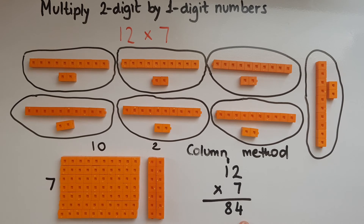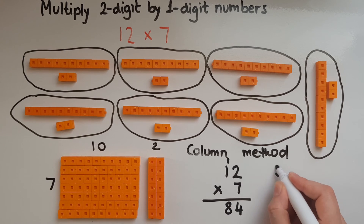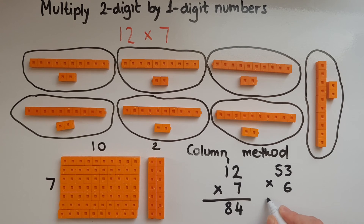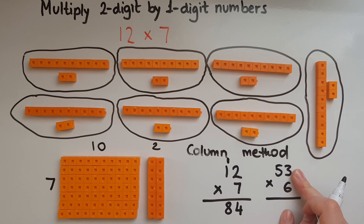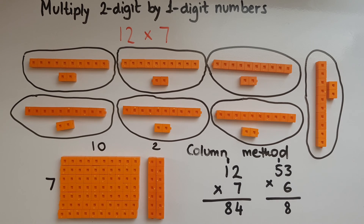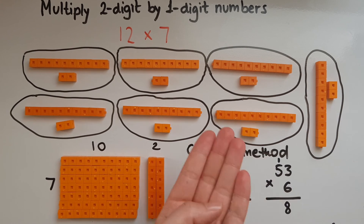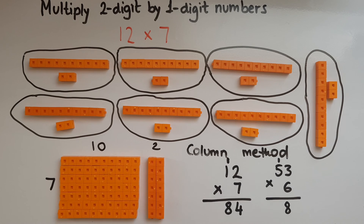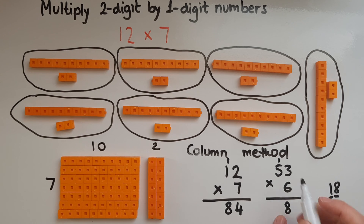Now let's do the other example: 53 times 6. We start with the units — 6 times 3 gives 18, so we put the 8 down and carry over the 1, which represents the tens. Because in 18, 8 is the unit and 1 represents the tens, so we move it to the tens column. Then 6 times 5 is 30, and the carried 1 makes 31. So 318 is the answer.